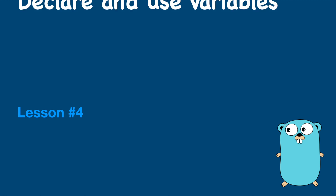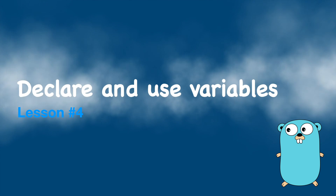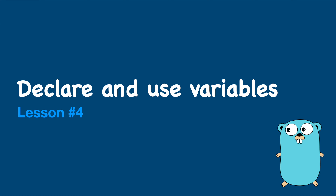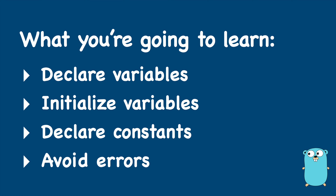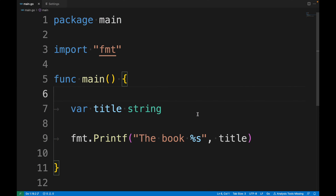Lesson four of the complete Go course. In this lesson I will explain how to declare and use variables in Go. We are going to see how to declare variables, how to initialize variables, how to declare constants, and how to avoid errors when you declare variables in Go.